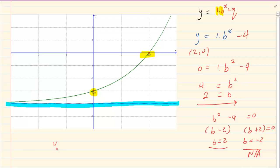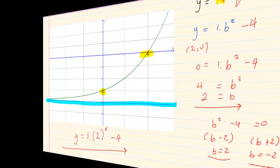So how do we rewrite the equation? y equals - they gave us the 1. Our b is 2 to the power of x and our q is minus 4. Thank you for watching.